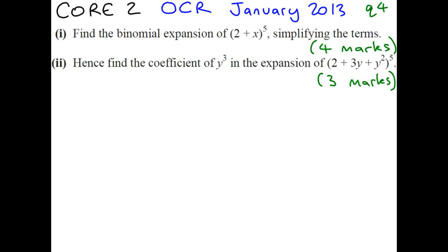Hello fellow mathematicians. Today we're going to look at Core 2, OCR January 2013 paper, and we're going to be looking at question 4. It's about binomial expansion, and you can see that the bracket that we have to expand is 2 plus x to the power of 5.